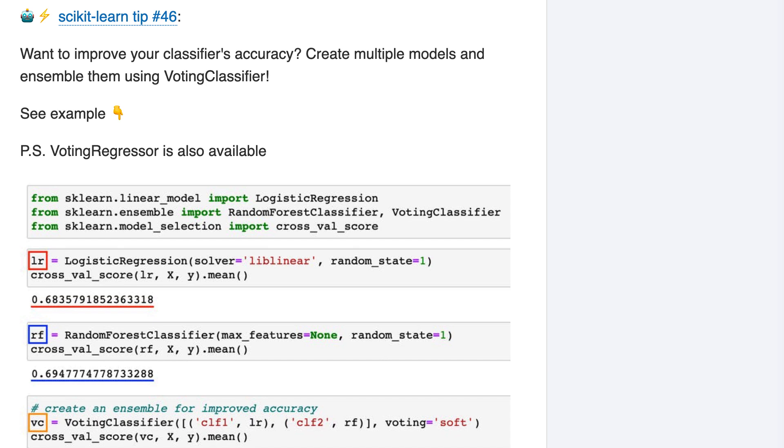Scikit-learn tip number 46. Want to improve your classifier's accuracy? Create multiple models and ensemble them using voting classifier. P.S. Voting Regressor is also available.